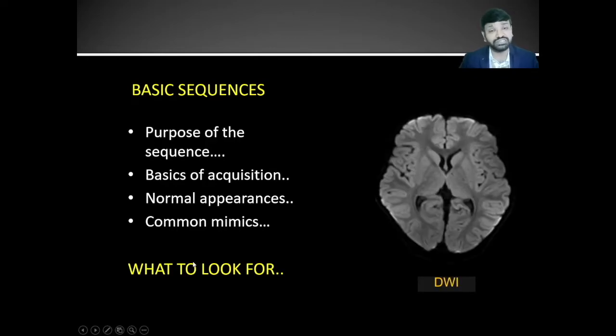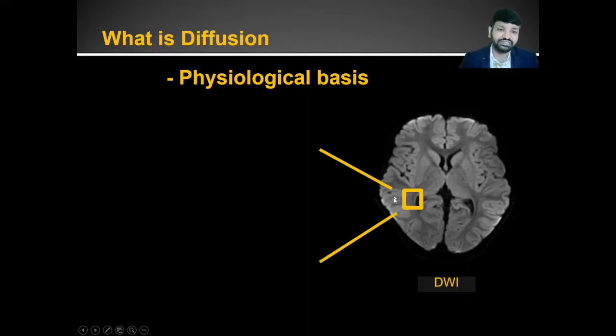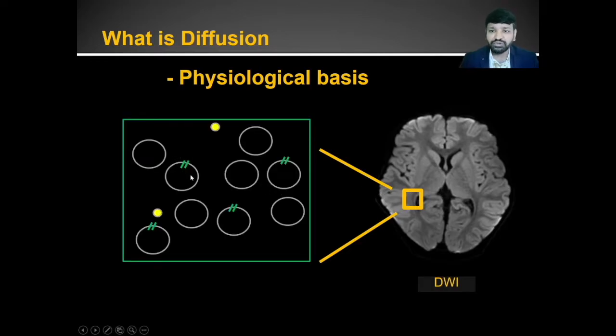Let us start our discussion with diffusion-weighted imaging. Coming to diffusion-weighted imaging, what is diffusion? What is the physiological basis? If you consider this small area, there will be multiple number of cells present. In between, the space is called the interstitial space or extracellular space. Water molecules will be able to diffuse freely within this interstitial space. If it has to move in and out of the cell, it will do so with the help of certain receptors. This is the normal diffusion happening in the brain parenchyma.